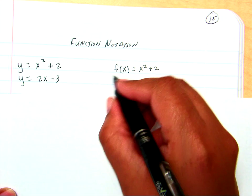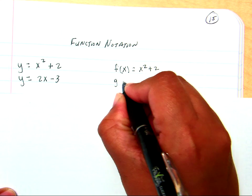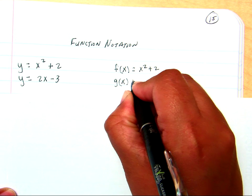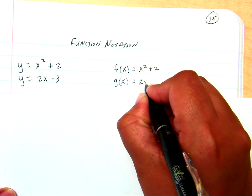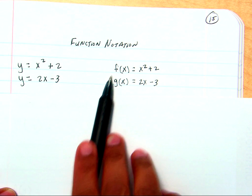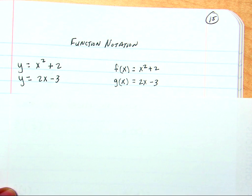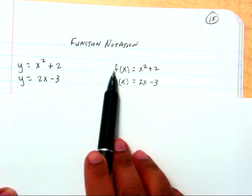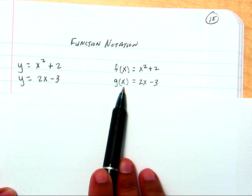So, on the second one, and we could use any letter we want, but I'm going to choose g of x, and I'm just going to say 2x minus 3. So, it's easier for me to say f of x equals x squared plus 2, and you guys know that's the equation I'm talking about.